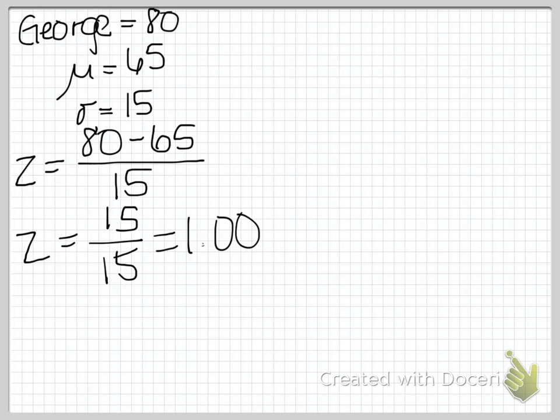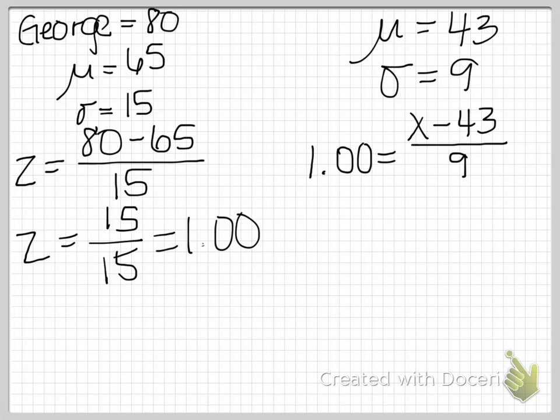Now to find out the equivalent in Samuel's class, we simply figure out what the z-score corresponds to in terms of a raw score. So in the other class we have a mean of 43 and a standard deviation of 9. So now we know the z-score. What we don't know is the raw score. So we'll set our z-score equal to x minus 43 all over 9. Now we simply solve for x. So we have 9 on the left, x minus 43 on the right, we add 43 to both sides, and we get 52.